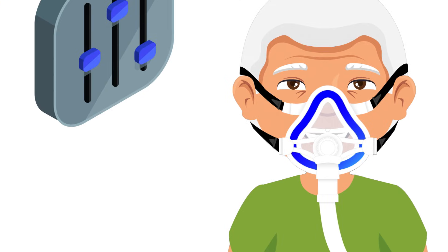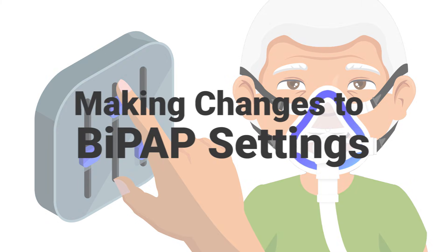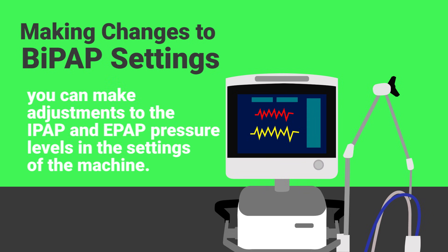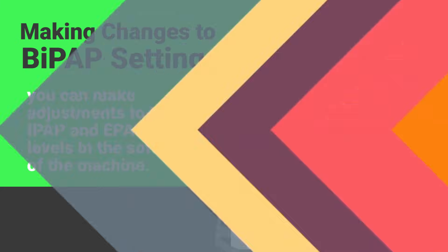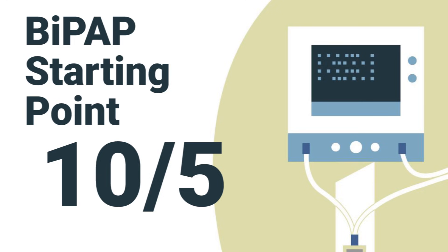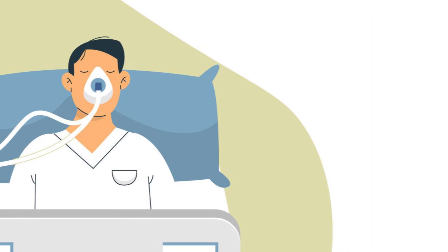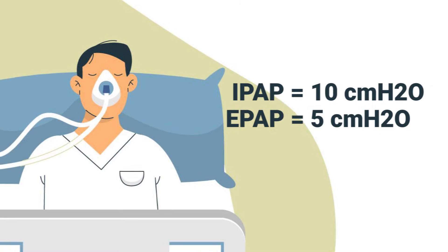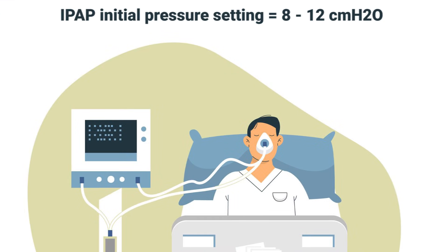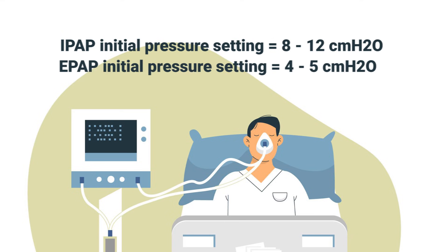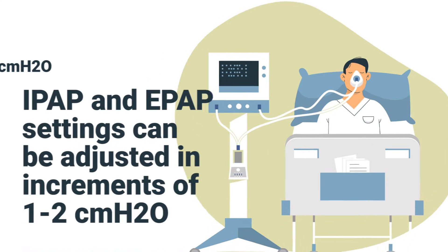Let's talk about making changes to BiPAP settings depending on the patient's needs. You can make adjustments to the IPAP and EPAP pressure levels in the machine settings. A good starting point for BiPAP is 10 over 5 — meaning an initial IPAP of 10 and an initial EPAP of 5. The appropriate initial IPAP range is 8 to 12, and the appropriate initial EPAP range is 4 to 5.